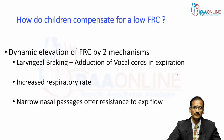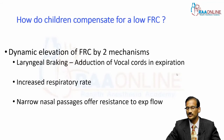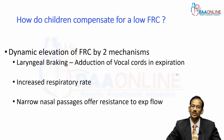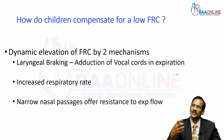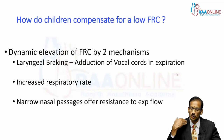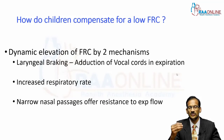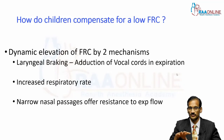Since children have a low FRC, they have some intrinsic mechanisms to compensate for it. One is called laryngeal braking — when they exhale, they tend to partially adduct the vocal cords. This is seen clinically as grunting: during expiration they make a sound because of adduction of the vocal cords. Grunting generally indicates respiratory pathology, but in children this can be a normal phenomenon — one way to compensate for the low FRC.